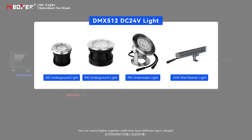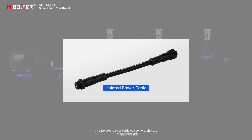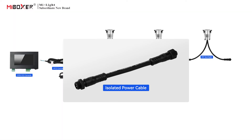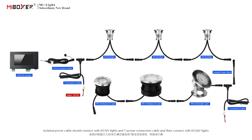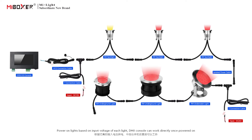To control lights together when they have different input voltages, one isolated power cable can solve this issue. The isolated power cable should connect with DC 12-volt lights and the T power connection cable, then connect with DC 24-volt lights. Power on the lights based on the input voltage of each light. The DMX console can work directly once powered on.